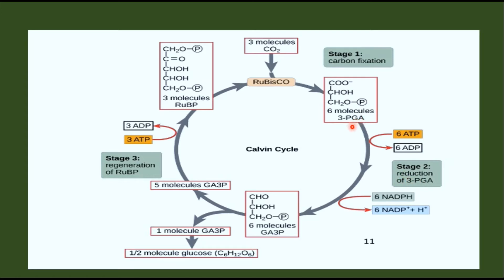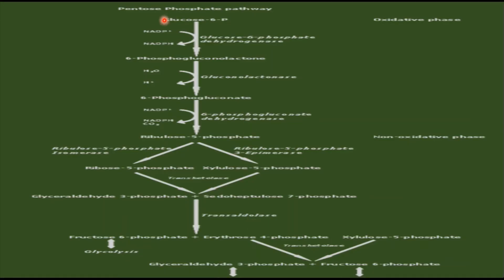In the second phase, the reduction phase, the 3-phosphoglyceric acid is reduced to glyceraldehyde 3-phosphate using ATP and NADPH — the assimilatory power formed in the light reaction. After this, the products enter the third phase: regeneration of RuBP (ribulose bisphosphate).